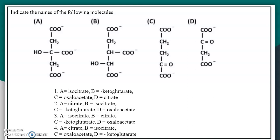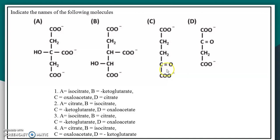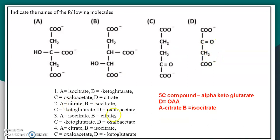Now, indicate the names of the following molecules. Four structures of molecules are given and you have to identify which compound each is — they belong to the citric acid cycle. In the citric acid cycle, only one five-carbon compound is present, which is alpha-ketoglutarate. The four-carbon compound is oxaloacetate, which can be seen in structure D. Structure A is citrate and B is isocitrate. Option two is the correct answer.